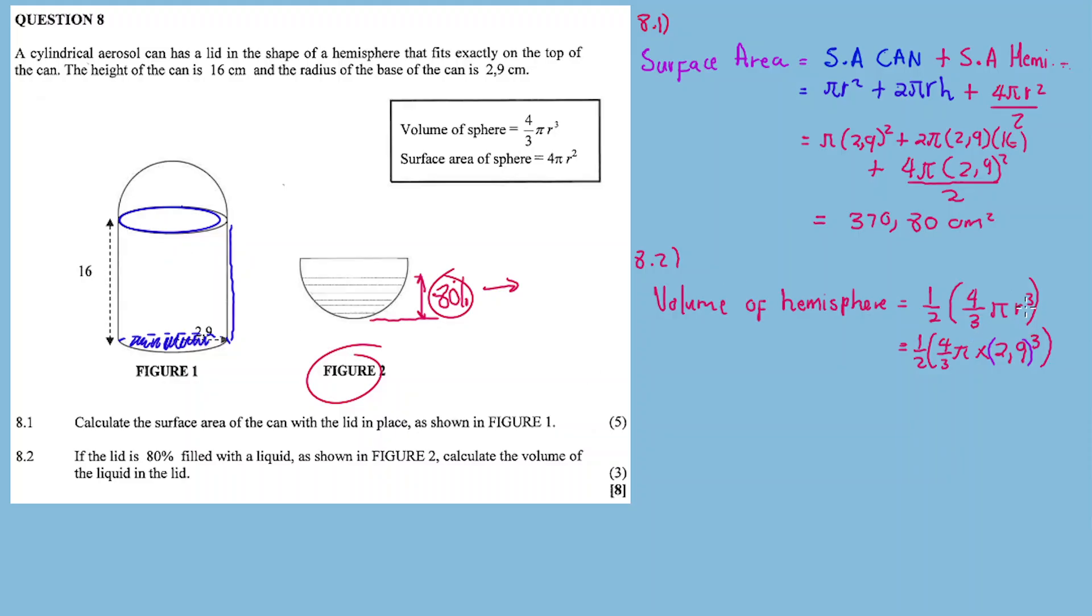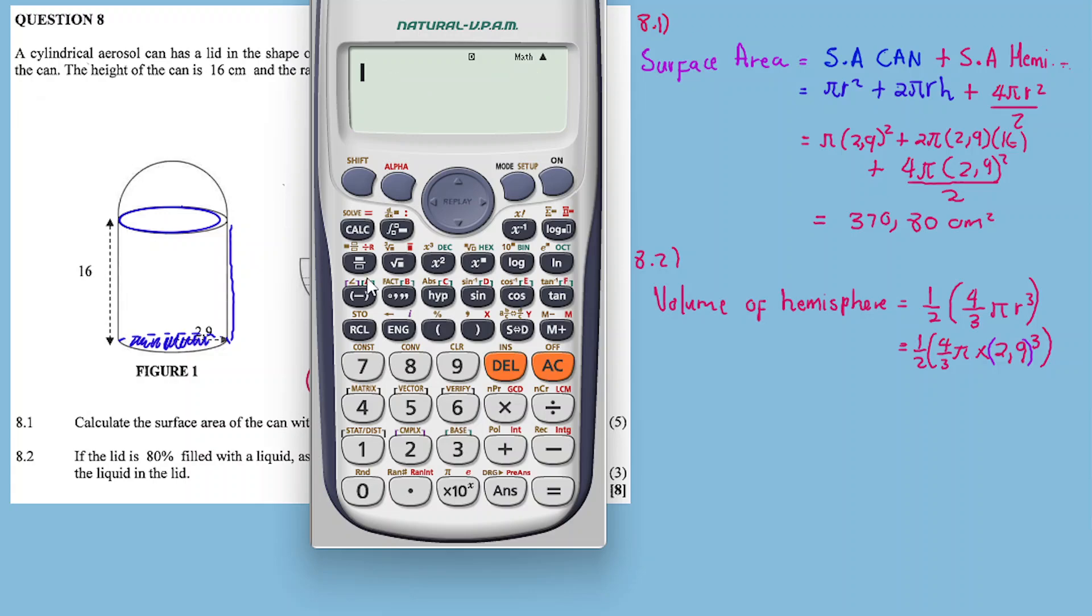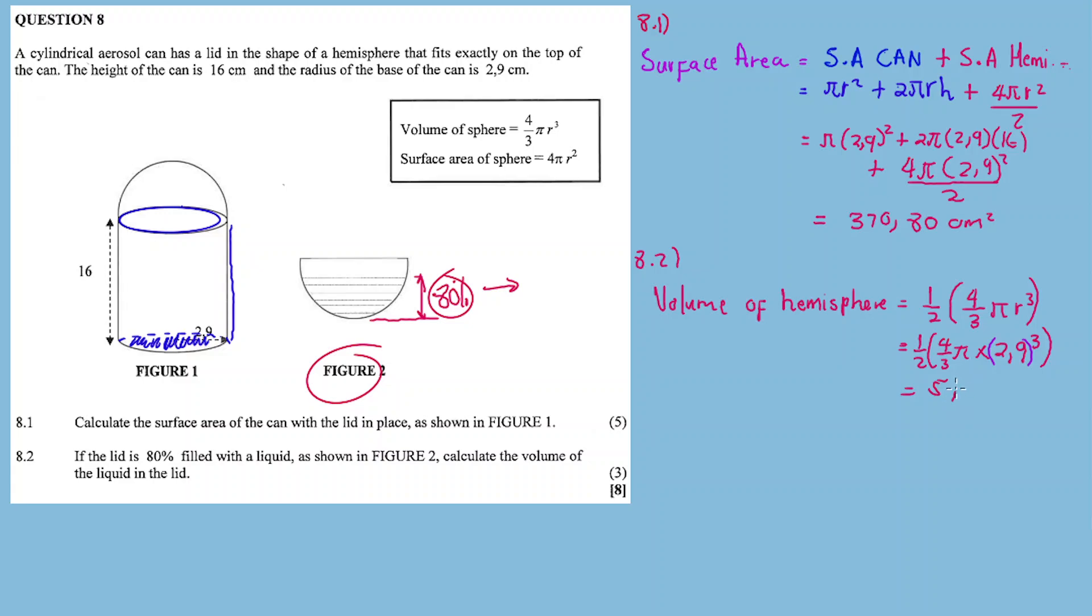Substitute: 1/2 × 4/3 × π × (2.9)³. It's going to be 1/2 × 4/3 × π × (2.9)³.